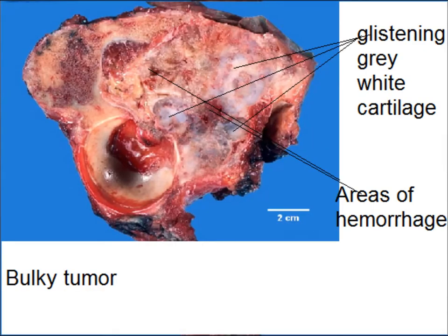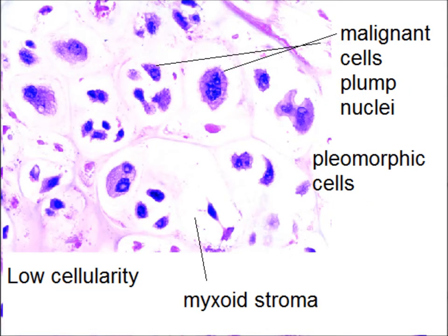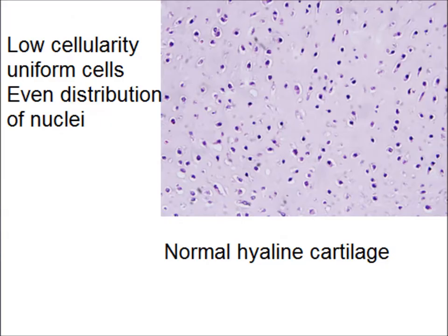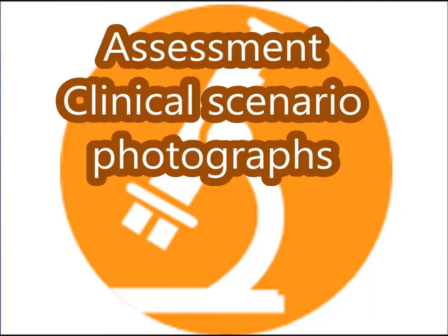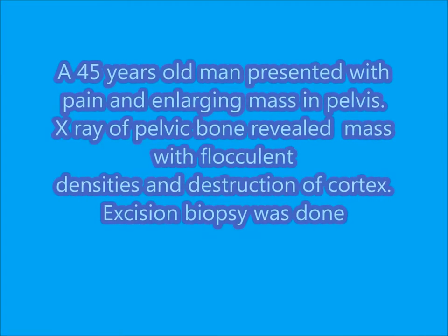The gross specimen shows glistening gray-white nodules of cartilage with a mucoid appearance. Other specimens show glistening gray-white cartilage with areas of hemorrhage. Microscopically, they are often of low cellularity, showing malignant cells with plump nuclei, pleomorphic cells, and myxoid stroma. This is the normal hyaline cartilage for comparison — low cellularity, uniform cells, and even distribution of nuclei.